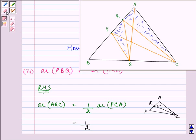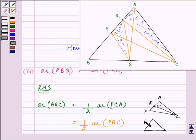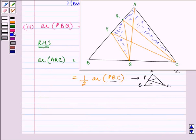Now, APC can be written as equal to PBC, because in triangle ABC, P is the midpoint of AB, so CP is the median, and area of APC equals area of PBC. So I can write either PCA or PBC — they have equal areas.